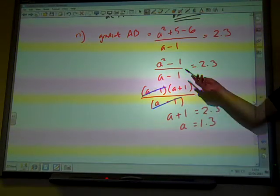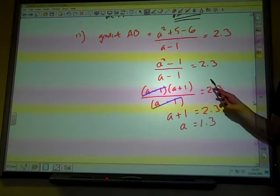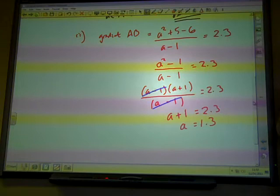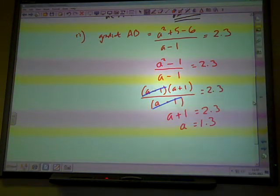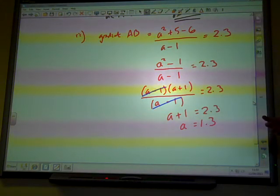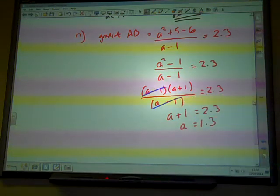I've also done this by multiplying by the (a - 1) and taking it there. Then you get a quadratic equation that you have to solve, and it does take a little bit longer. You end up with two solutions: a = 1 and a = 1.3, and only one would make sense. So it's a bit harder.